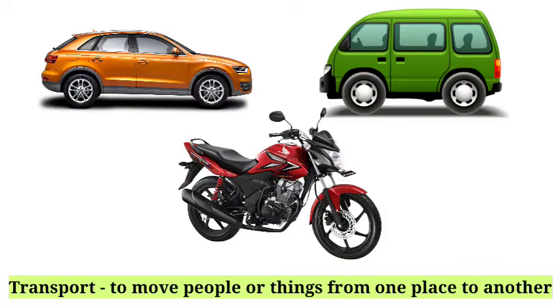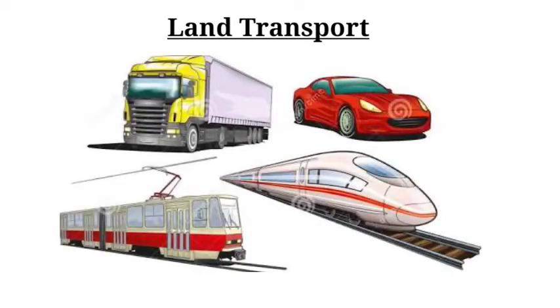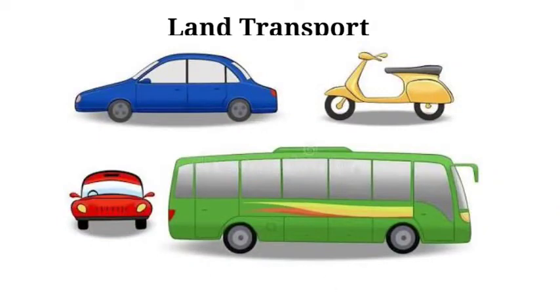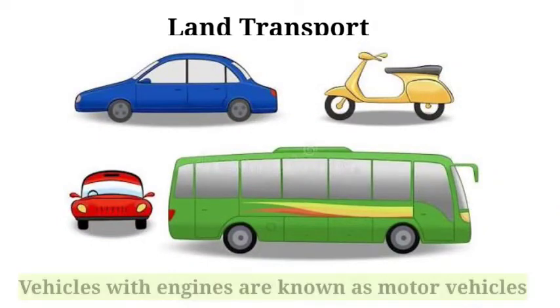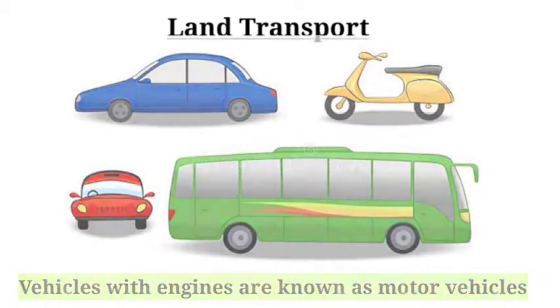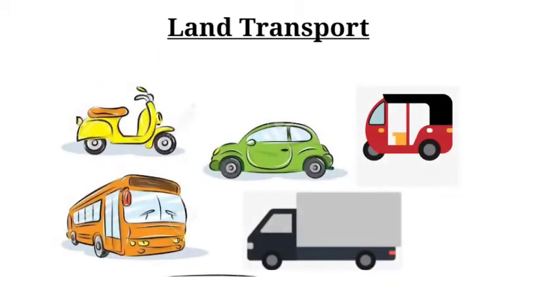We use many different means of transport. Let us see them one by one. Land transport — means of land transport move either on roads or on tracks. Those which move on roads are called vehicles, and vehicles with engines are known as motor vehicles.